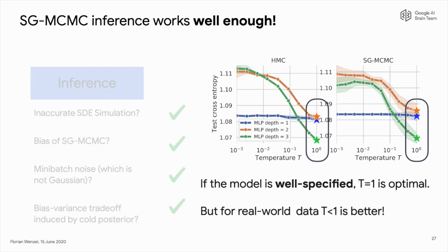Looking at this plot again, there's something else interesting: in this well-specified setting, temperature one actually performs best. But for real-world data, as we saw in the beginning, temperatures less than one are better. So maybe there's a problem with misspecification of the model.